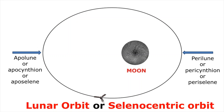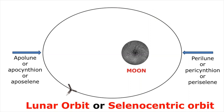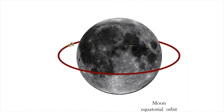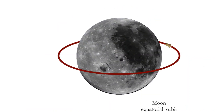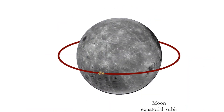The point closest to the moon's center of attraction is known as perilune, perisentheon, or periseline. In a lunar equatorial orbit,